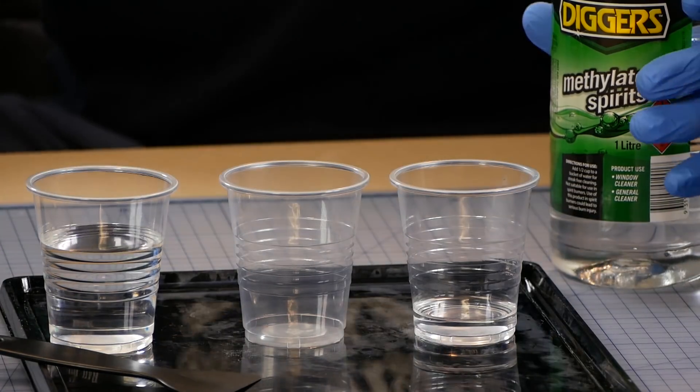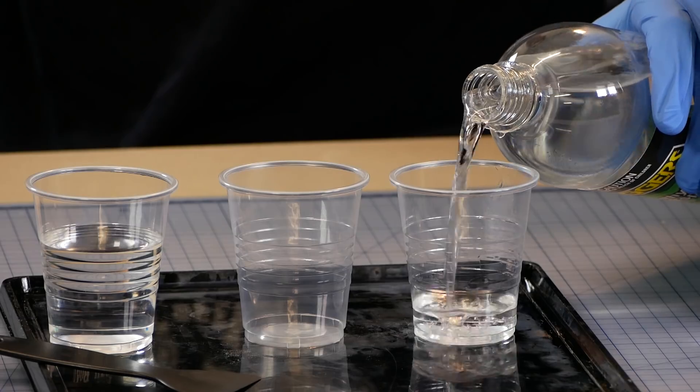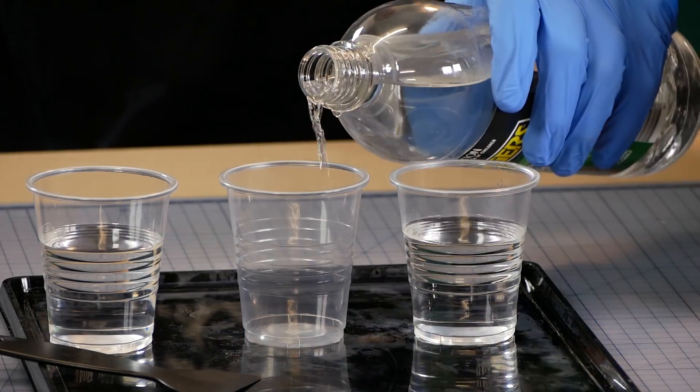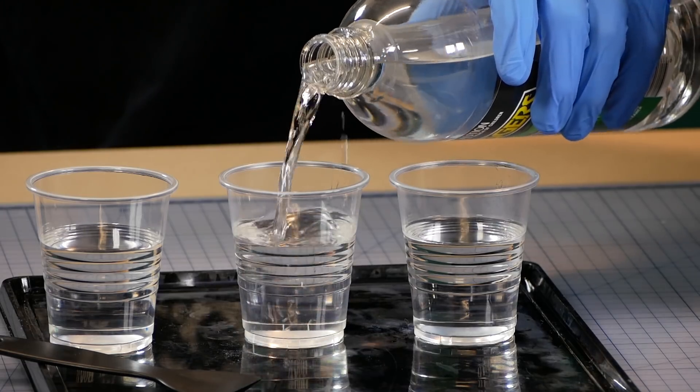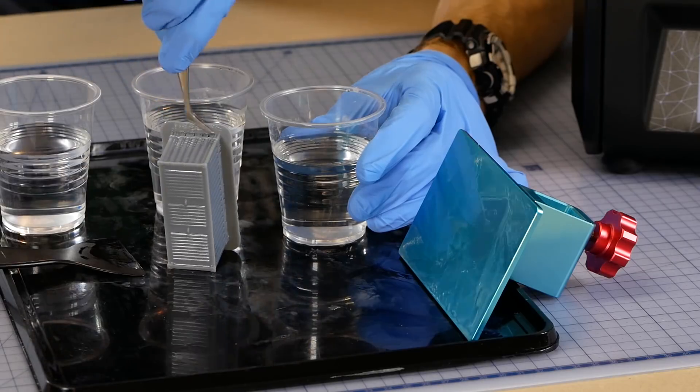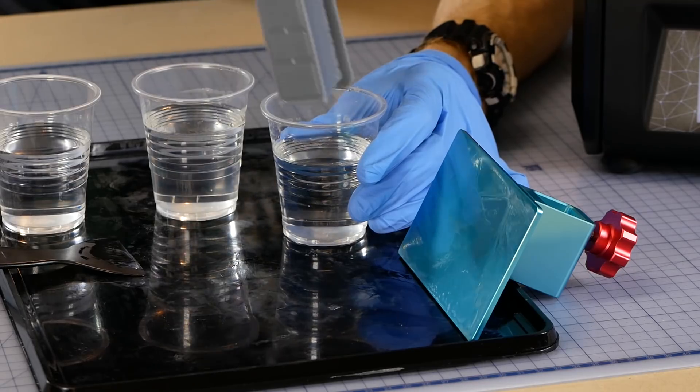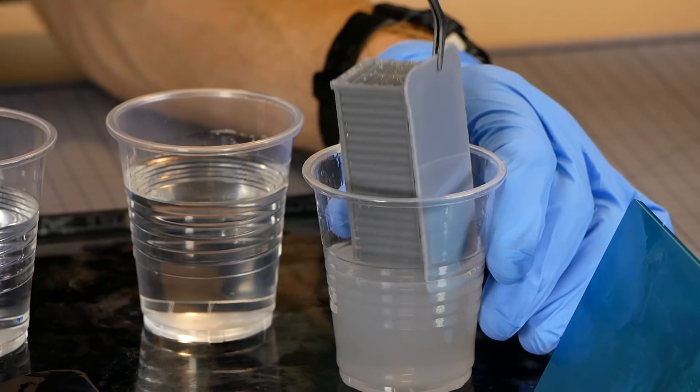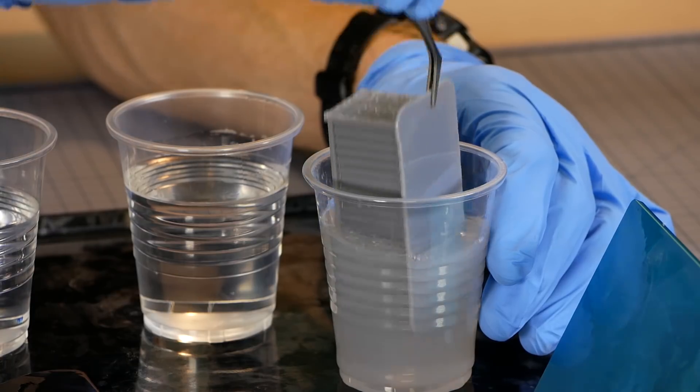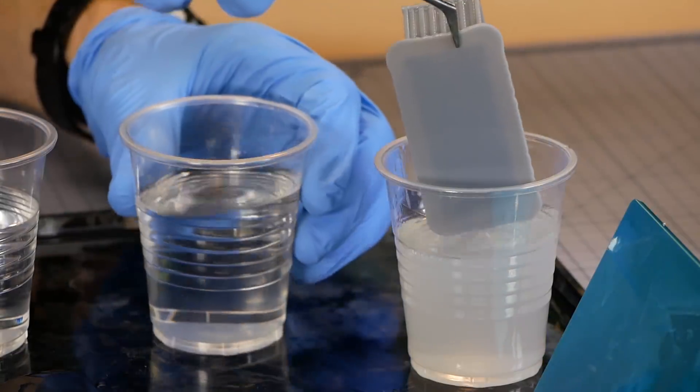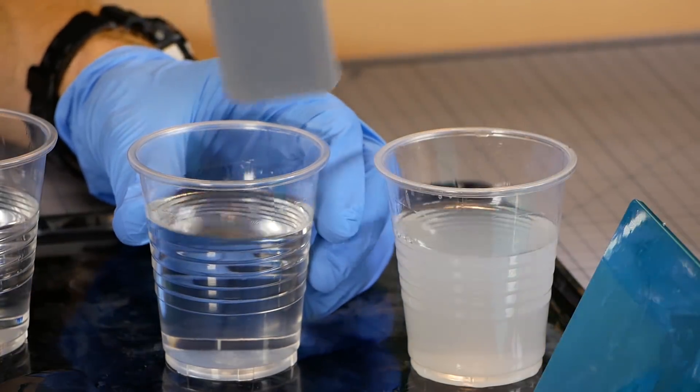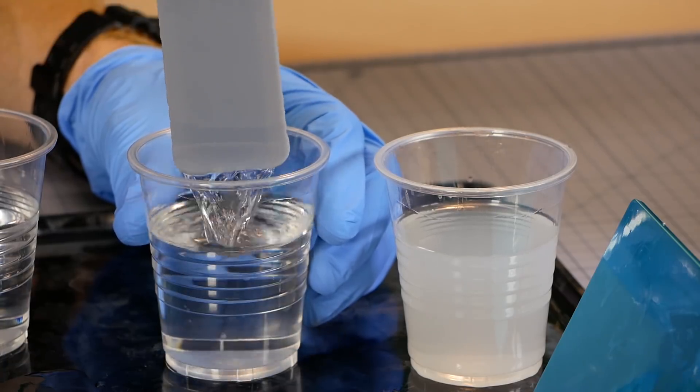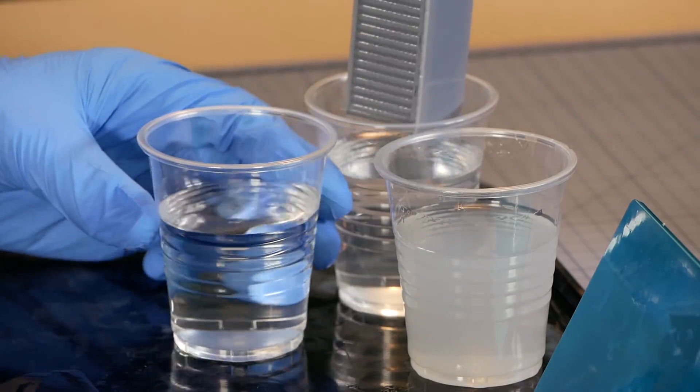To remove the uncured resin from the model it's recommended to soak it in isopropyl alcohol. Although in Australia isopropyl alcohol tends to be a little bit expensive in large amounts but I've found methylated spirits from the hardware store is much cheaper and does a similar job. I use a three-step process which involves dunking the model in a cup of methylated spirits for about 20 seconds or until most of the uncured resin has dissolved. Next I dunk it in some clean methylated spirits and finally I dunk it in water to wash away the residual methylated spirits.